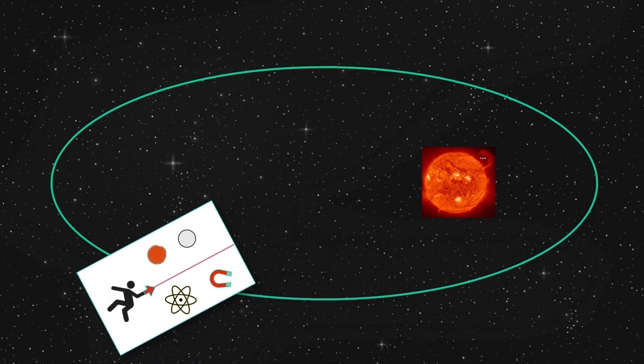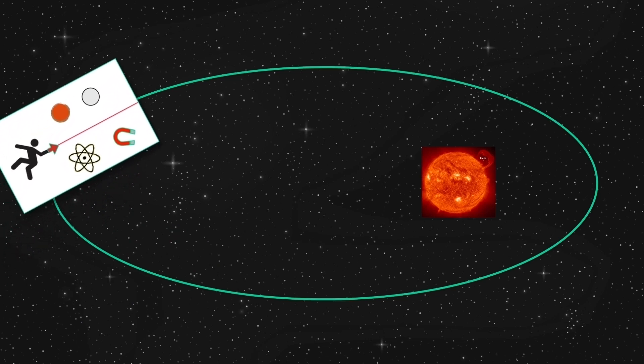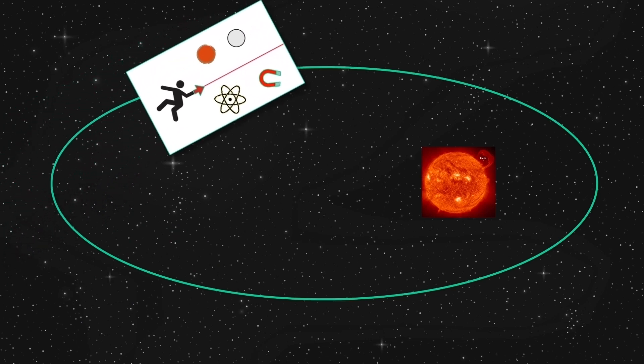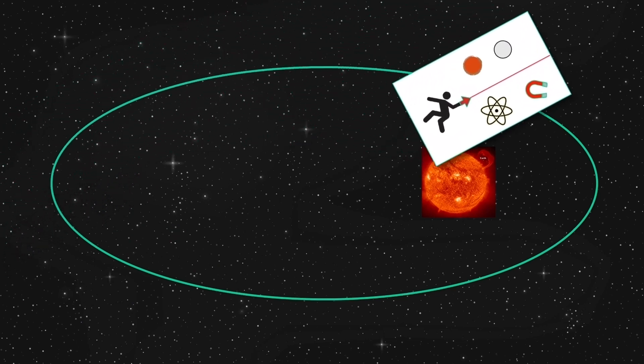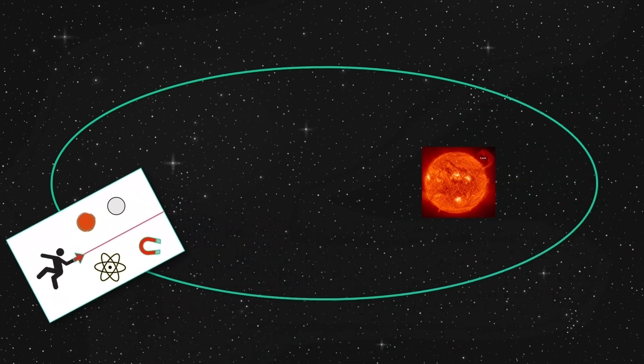And of course, I'm ignoring the non-uniformity of this gravitational field. There will be tidal forces due to that. But removing that, we can make the orbit large, like the size of Jupiter's orbit at about five astronomical units. That should do it.